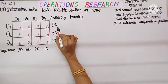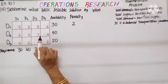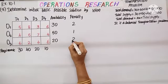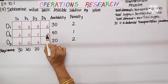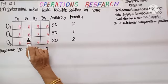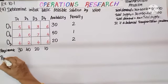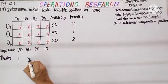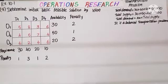Calculating the row penalties: O1 row — least is 3, next higher is 5, so 5 minus 3 is 2. O2 row — 5 minus 4 is 1. O3 row — two costs are equal at 4, so we use the next higher: 5 minus 4 is 1. Column-wise penalties: D1 — 5 minus 4 is 1. D2 — 5 minus 2 is 3. D3 — 4 minus 3 is 1. D4 — 6 minus 4 is 2. Out of all these, the highest penalty is 3.